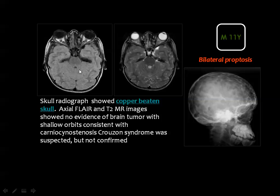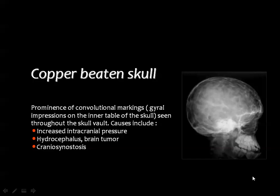One manifestation of cranial stenosis is the silver or copper beaten skull, where you see indentations of convolutional markings on the cranial bone. The main causes of copper beaten skull are increased intracranial tension, presence of hydrocephalus or brain tumor, and cranial stenosis.